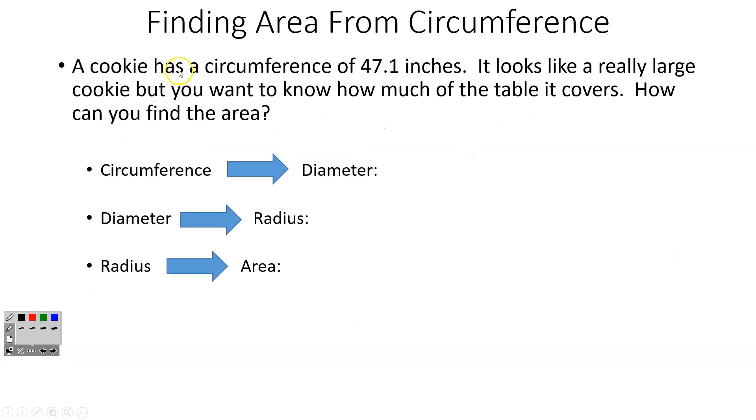So how about this one? A cookie has a circumference of 47.1 inches. It looks like a really big cookie, but you want to know how much of the table it's going to cover. So we have to do circumference to diameter, and that means we're going to divide by 3.14. So I'm going to do 47.1 divided by 3.14. I'm going to take this in my calculator, and I get an answer of 15.